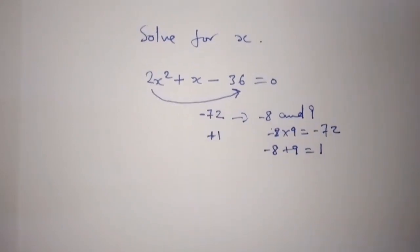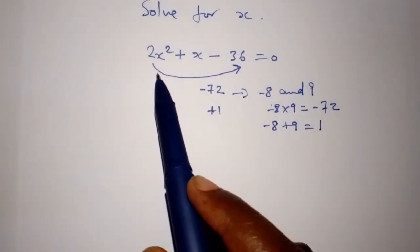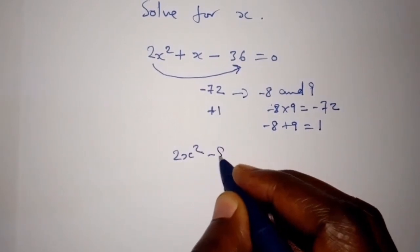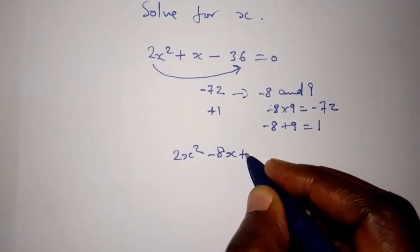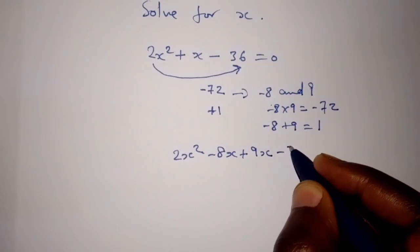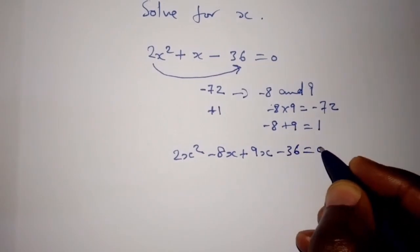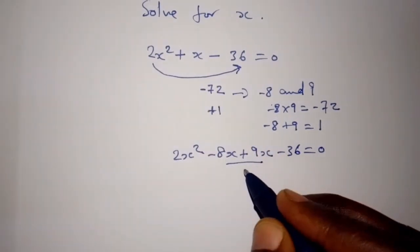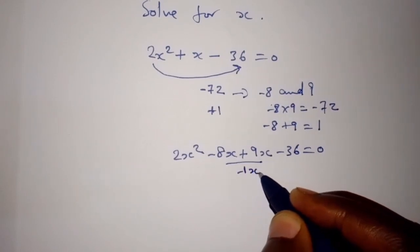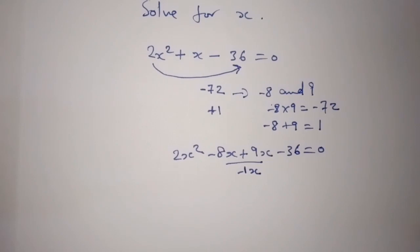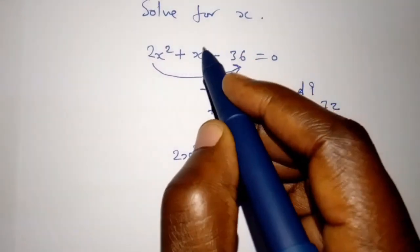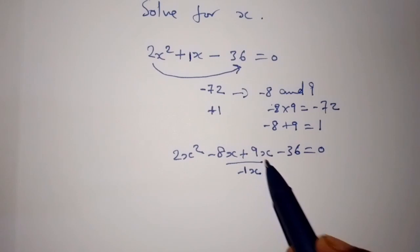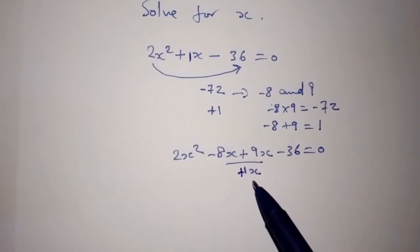Then from there, we can rewrite this equation as 2x squared minus 8x plus 9x minus 36 is equal to 0. So negative 8x plus 9x is positive 1x.